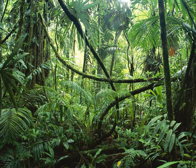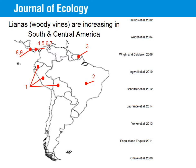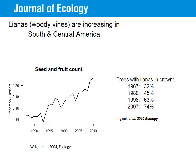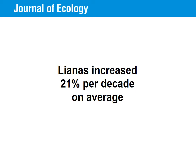Once in the canopy, lianas eventually usurp light resources from their hosts, and this has a negative impact on tree growth, survival, and reproduction. The world is also changing, and tropical forests are no exception. Over the past decades, many studies have documented increasing abundances of lianas across the tropical latitudes of South America. The proportion of liana fruits and seeds in seed trap counts, and the mean proportion of trees carrying lianas have all increased — on average, lianas have increased 21% per decade.